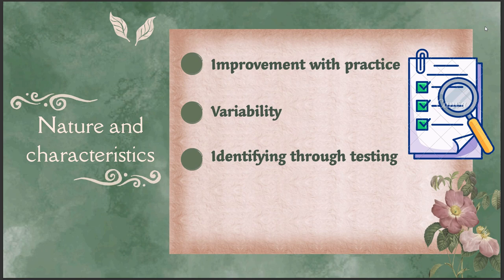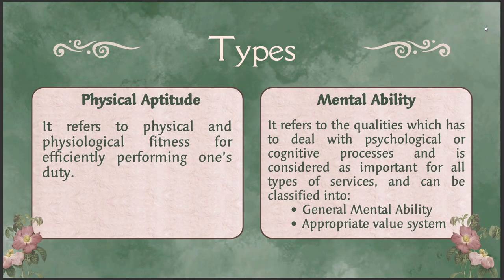Those are the nature and characteristics of aptitude. Now, what are the types of aptitude? First, physical aptitude — it refers to the physical and physiological fitness for efficiently performing one's duties. Physical ability is especially needed for field work, such as for soldiers and sports persons, who need strong physical fitness to perform and survive in their roles.